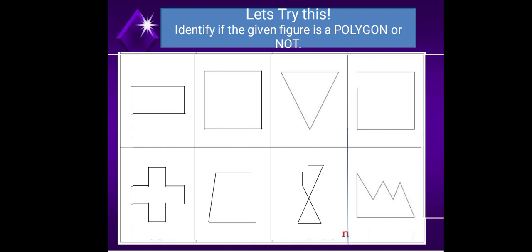Next image. Obviously not a polygon because it is not a closed figure. Also, it is not a closed figure, therefore it is not a polygon. And the last is a polygon.